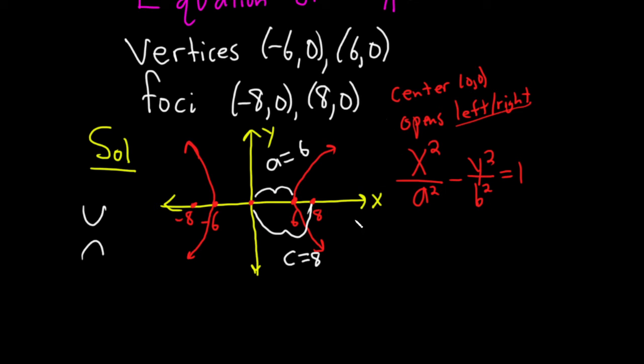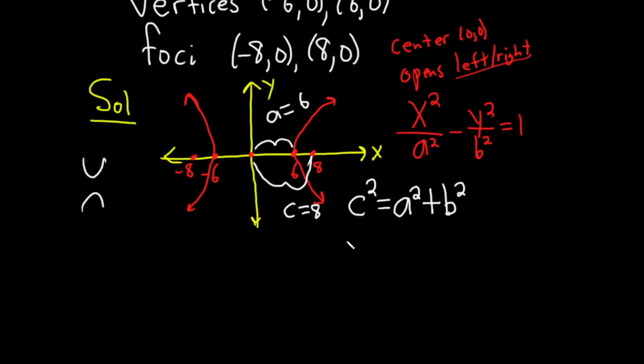So to find b, there's a formula that relates a, b, and c. It's c² = a². And the trick is it's the opposite sign. So if there's a minus here, there's a plus here. So plus b². So you just switch the sign. So this will be 8² = 6² + b².